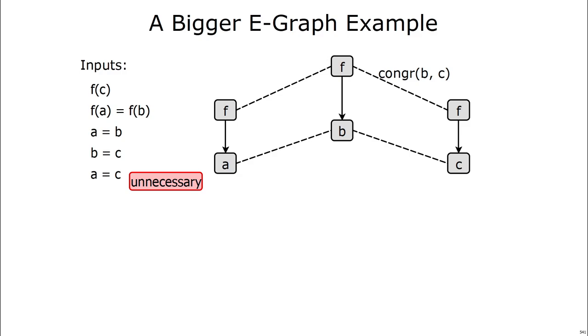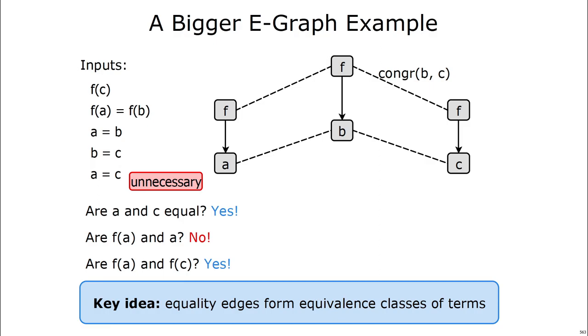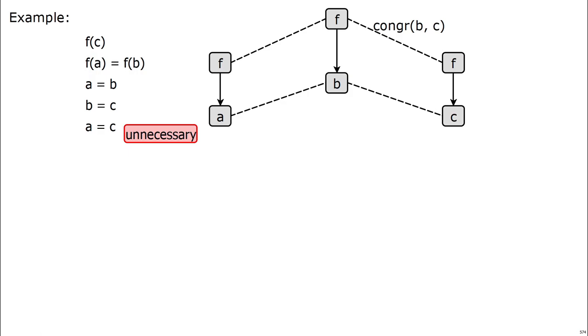So this e-graph represents a bunch of terms that are equal. And so what we want to get out of this example is that these equality edges form equivalence classes of terms. There are three terms on the top, f of a, f of b, and f of c, which are equal, and three terms on the bottom, a, b, and c, which are equal.